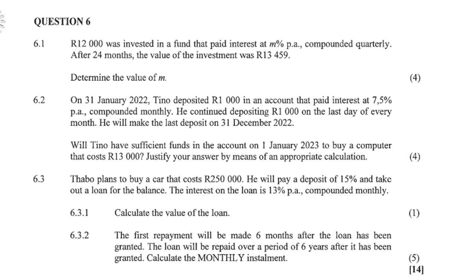Question 6.3. Turbo plans to buy a car that costs 250,000 Rand. He will pay a deposit of 15% and take out a loan for the balance. The interest on the loan is 13% per annum compounded monthly. Calculate the value of the loan, and secondly, given that the first repayment will be made 6 months after the loan has been granted and the loan repaid over 6 years, calculate the monthly installment. This question on financial maths is worth 14 marks.